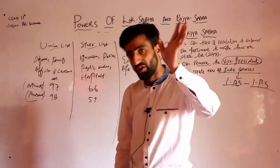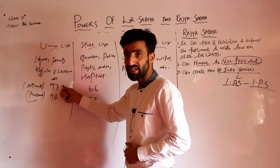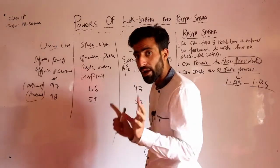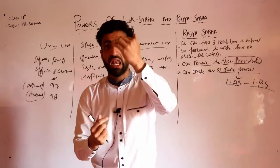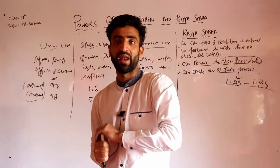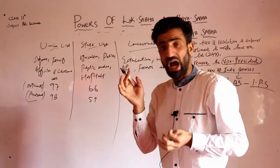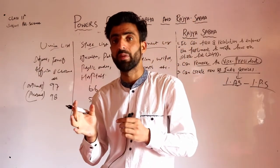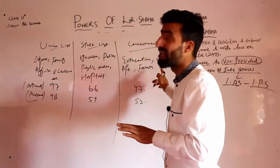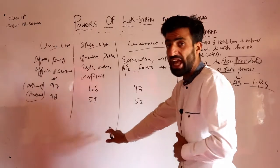Originally - jab Constitution banayi gayi thi, 1950 ki baat karta hoon - Union List mein khali 97 subjects the, aaj hai 98. State List mein the pehle 66 subjects, aaj hai 59. Toh yahan se aapko pata lagta hai ki State se power liya gaya hai - State se law banane ka kaam kuch subjects par liya gaya hai. Concurrent List mein pehle the 47 subjects aur aaj hai 52.